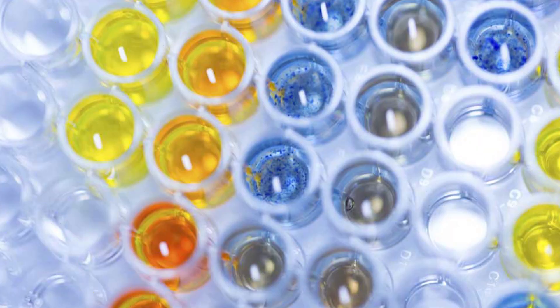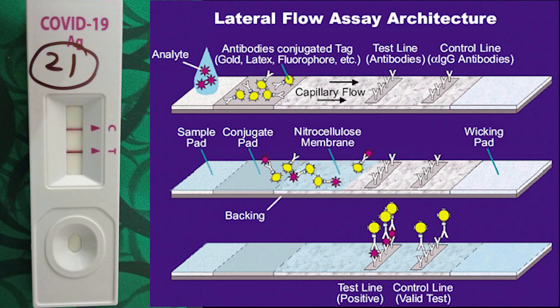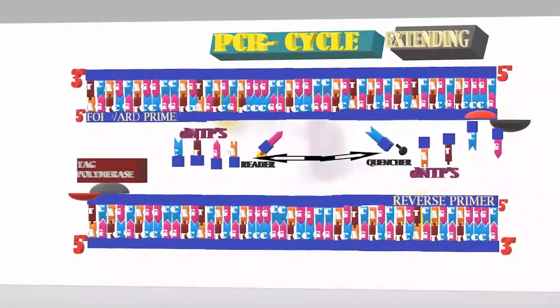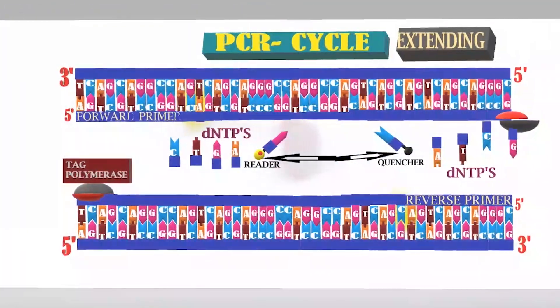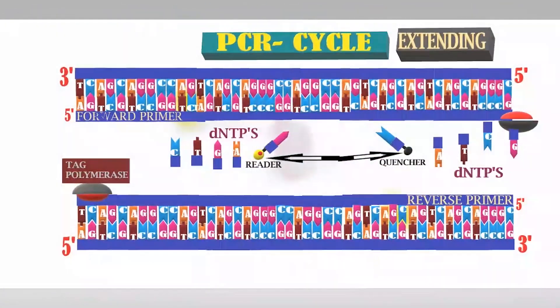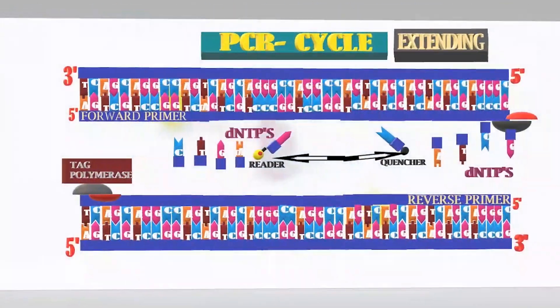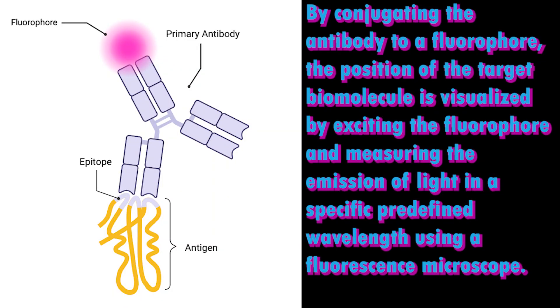When we talk about virus testing, we always think about ELISA test, immunochromatography, PCR test, and immunofluorescence for hepatitis. All these tests are serological testing that detects the antibodies or antigens present in the patient sample.